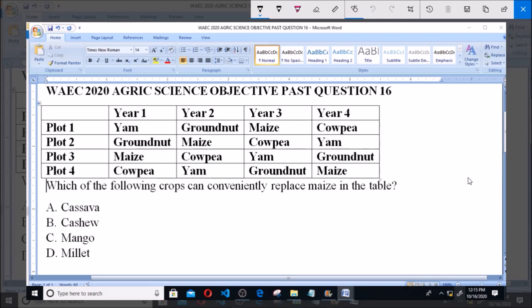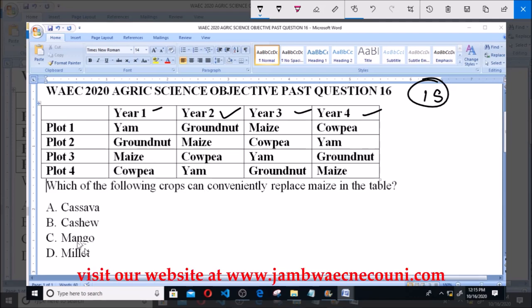You have this table here, which was used also in question 15, showing four plots where four different crops are planted in four consecutive years. Now, which of the following crops can conveniently replace maize in the table? A. Cassava, B. Cashew, C. Mango, D. Millet.